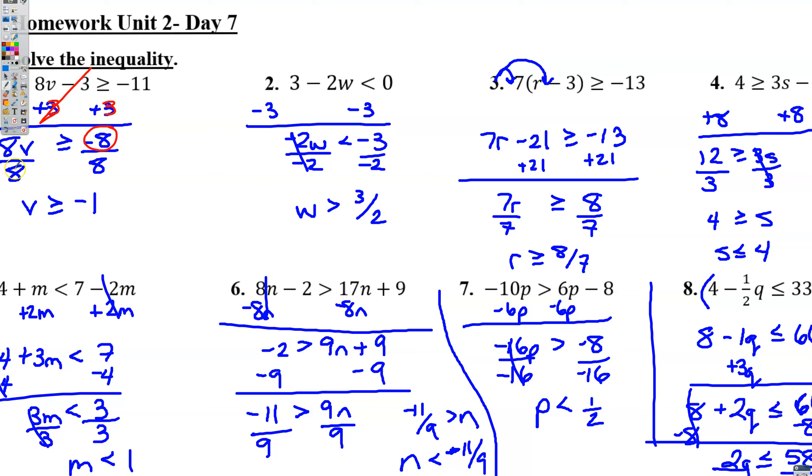Then the final step is to get rid of the 8 that's right next to the v. Since this is 8 times v, the opposite of multiplying by 8 is to divide by 8. Whatever you do on this side, you also do on the other side. Negative 8 divided by 8 gives us negative 1. We don't need to flip the sign because we didn't divide by a negative. The thing we divided by was positive 8.